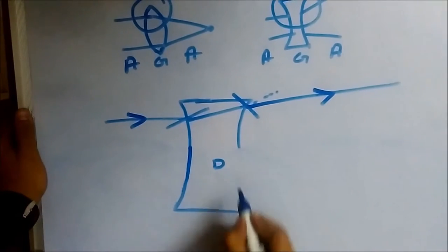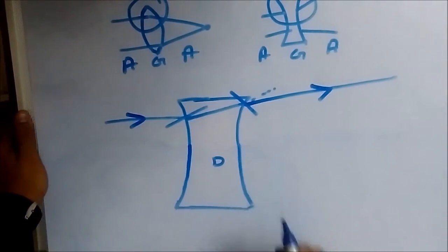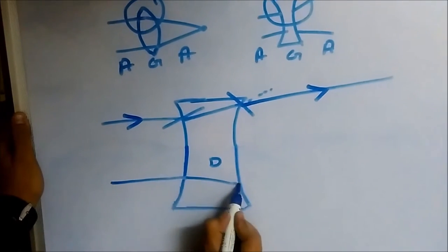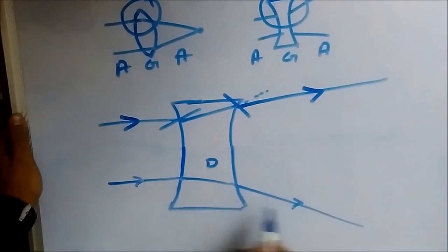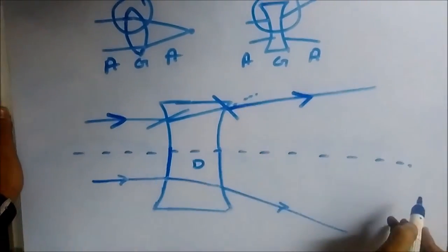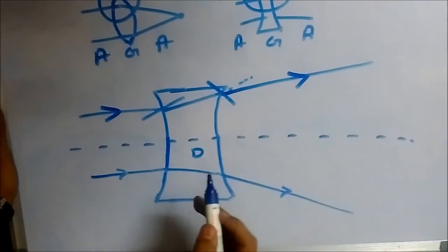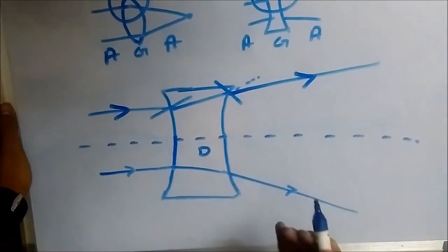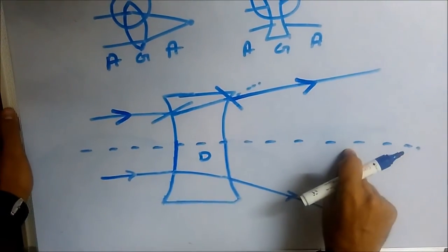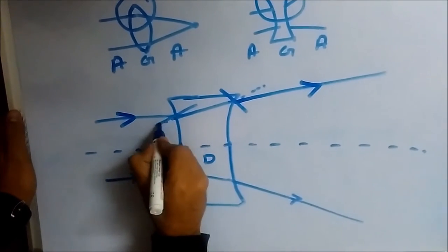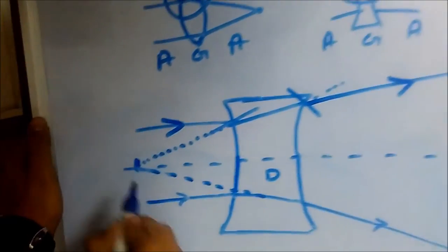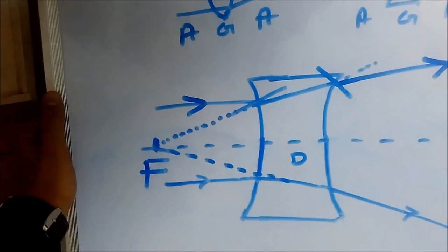Extending this to the whole lens: a ray coming from below undergoes the same bending and also diverges. The rays are diverging — they are not meeting at any real point. Unlike the convex lens where rays met at a focus, here we trace the diverging rays back on the other side. The point where these traced-back rays meet is what we call the focus of this concave lens.